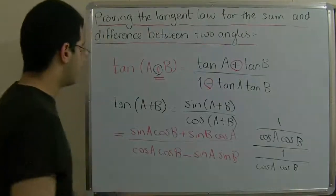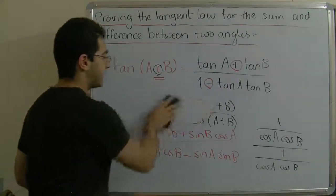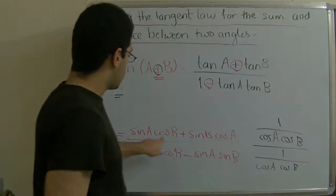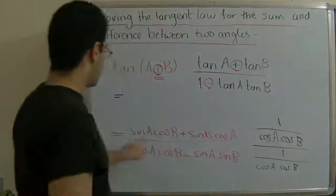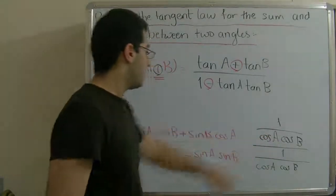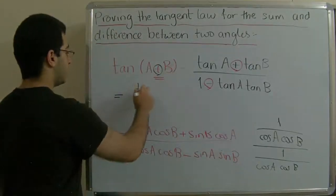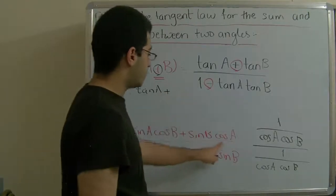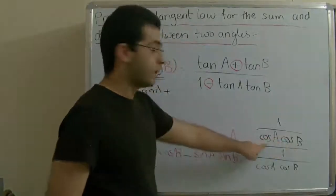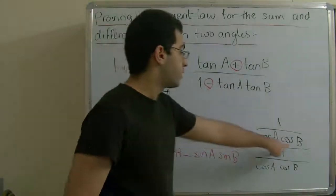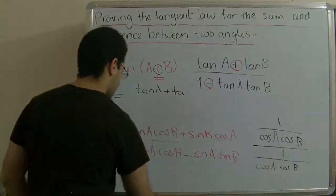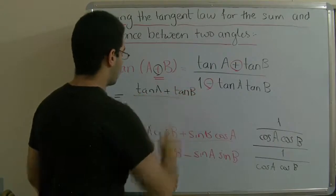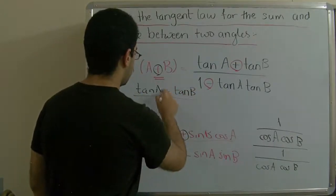If we do that, in the numerator we get sine a cosine b over cosine a cosine b, which leaves sine a over cosine a — that is tan a. Then the positive sign, and sine b cosine a over cosine a cosine b — cosine a cancels, leaving sine b over cosine b, which is tan b. The positive sign does not change.